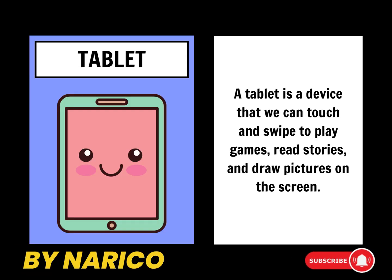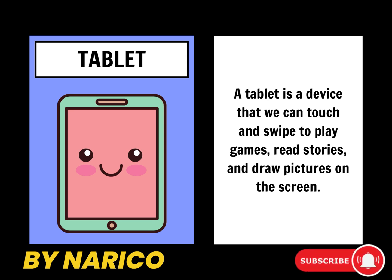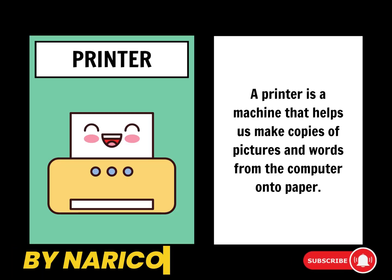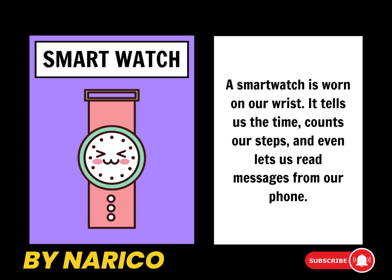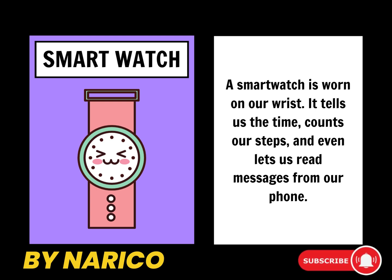A tablet is a device that we can touch and swipe to play games, read stories, and draw pictures on the screen. A printer is a machine that helps us make copies of pictures and words from the computer onto paper. A smartwatch is worn on our wrist, tells us the time, counts our steps, and even lets us read messages from our phone.